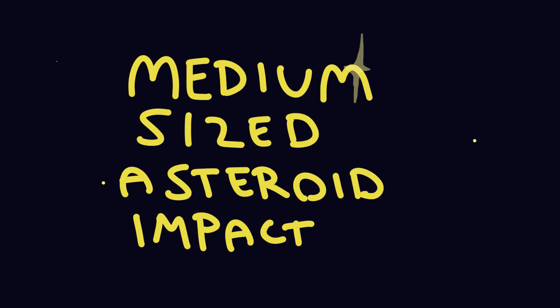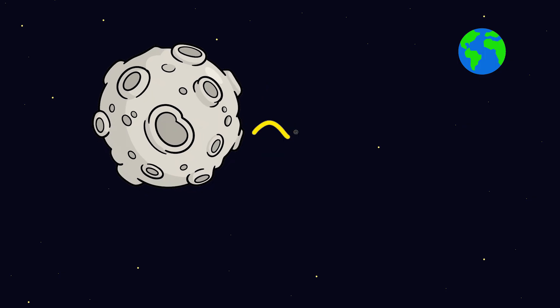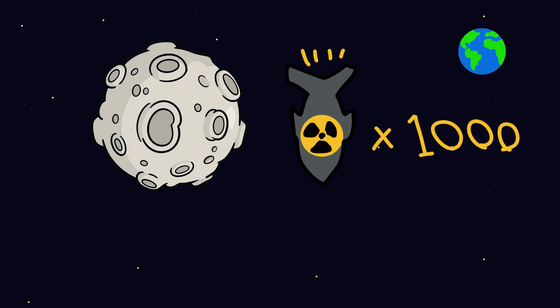Medium-sized asteroid impact. Imagine an Eiffel Tower-sized asteroid heading for Earth. It's moving at 60 times the speed of sound, carrying the energy of thousands of nuclear bombs.